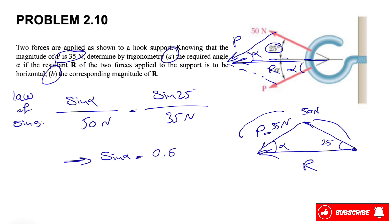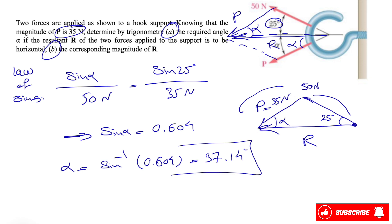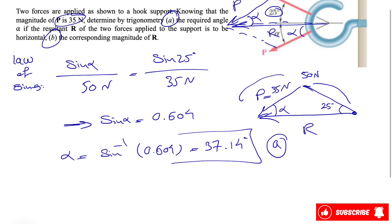From this we can find sine of alpha, which equals 0.604. Alpha is simply the inverse sine of 0.604, which gives us 37.14 degrees. So we found part (a) of the question — the required angle alpha is 37.14 degrees.